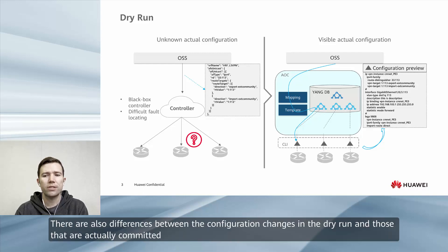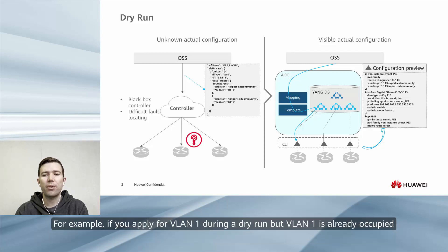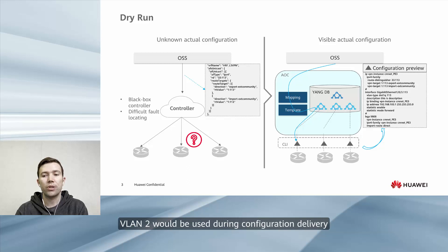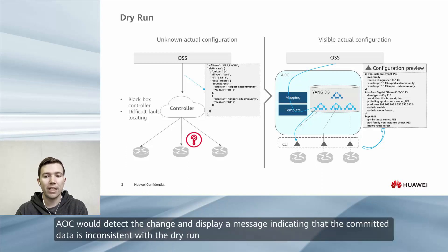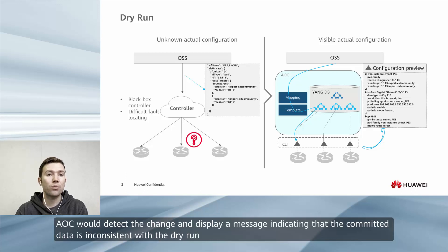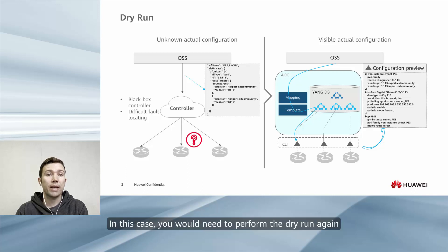There are also differences between the configuration changes in the dry run and those that are actually committed. For example, if you apply for VLAN 1 during a dry run but VLAN 1 is already occupied, VLAN 2 would be used during configuration delivery. AOC would detect the change and display a message indicating that the committed data is inconsistent with the dry run. In this case, you would need to perform the dry run again.